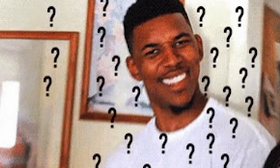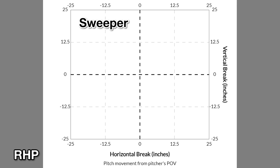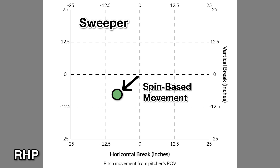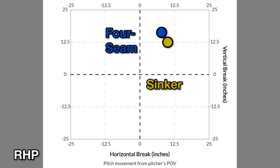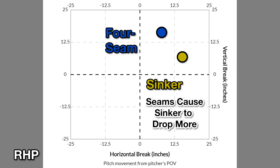The next evolution of pitch plots is thinking about how seams affect a pitch. Most teams are looking internally at plots that show how a pitch would move if seams weren't a factor, and then what the resulting movement is because of the seams. This is why four-seamers and sinkers are released essentially the same way for most pitchers — the seams do most of the work. They'd probably have the same movement without seams, but because of the ball's orientation, they end up in different places. By explaining more advanced concepts, it helps unlock more basic ones.